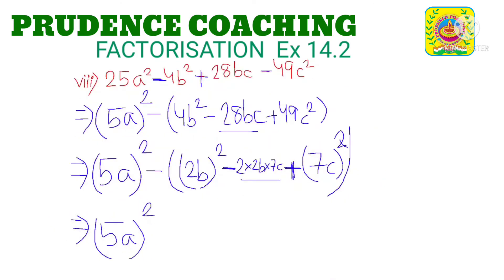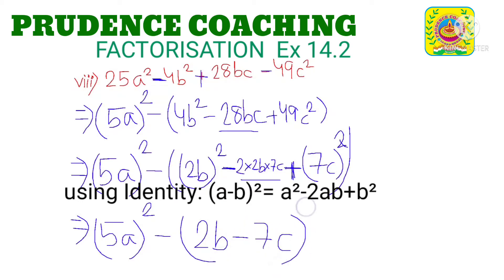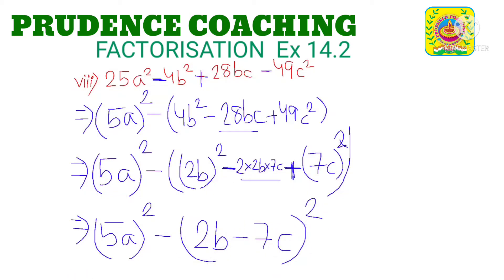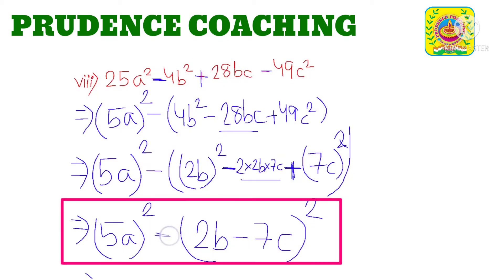So we can write this as 5a the whole square as it is, minus — this one is a square minus 2ab plus b square — that can be written as a minus b the whole square. But here a is 2b and b is 7c, so it becomes 2b minus 7c the whole square.